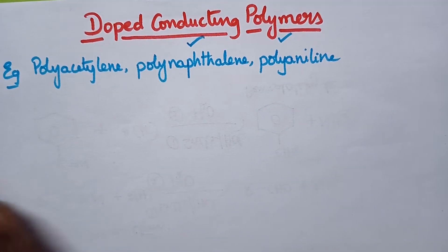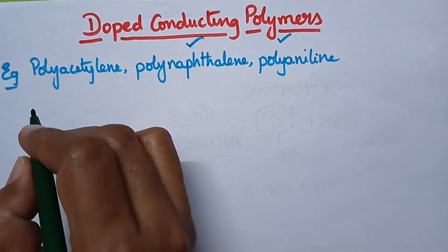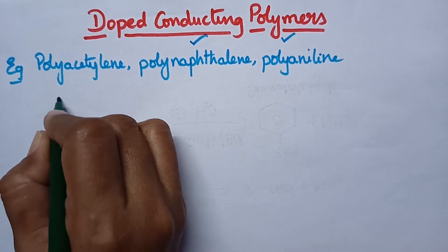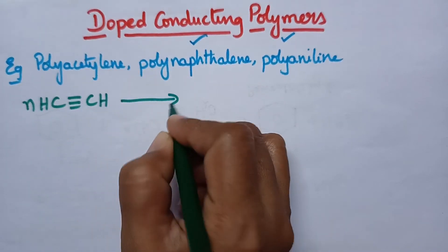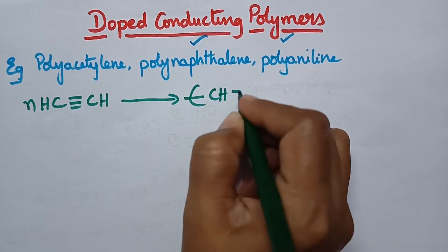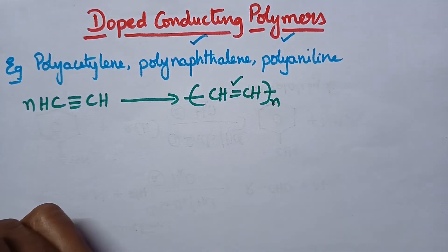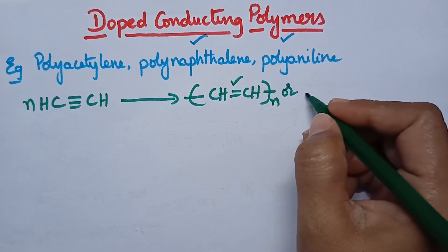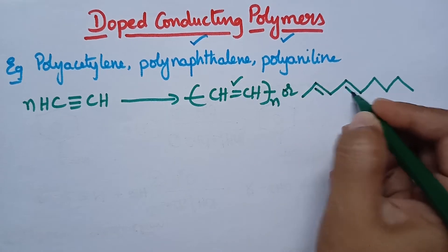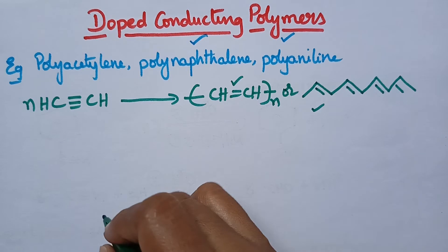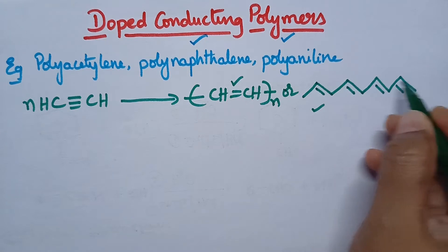Coming to the structure of polyacetylene — let us see its formation. Polyacetylene is formed by the addition polymerization of acetylene molecules. They undergo polymerization and result in the formation of polyacetylene. The polymer still contains double bonds, and polyacetylene can be represented as a compound having alternating double bonds.